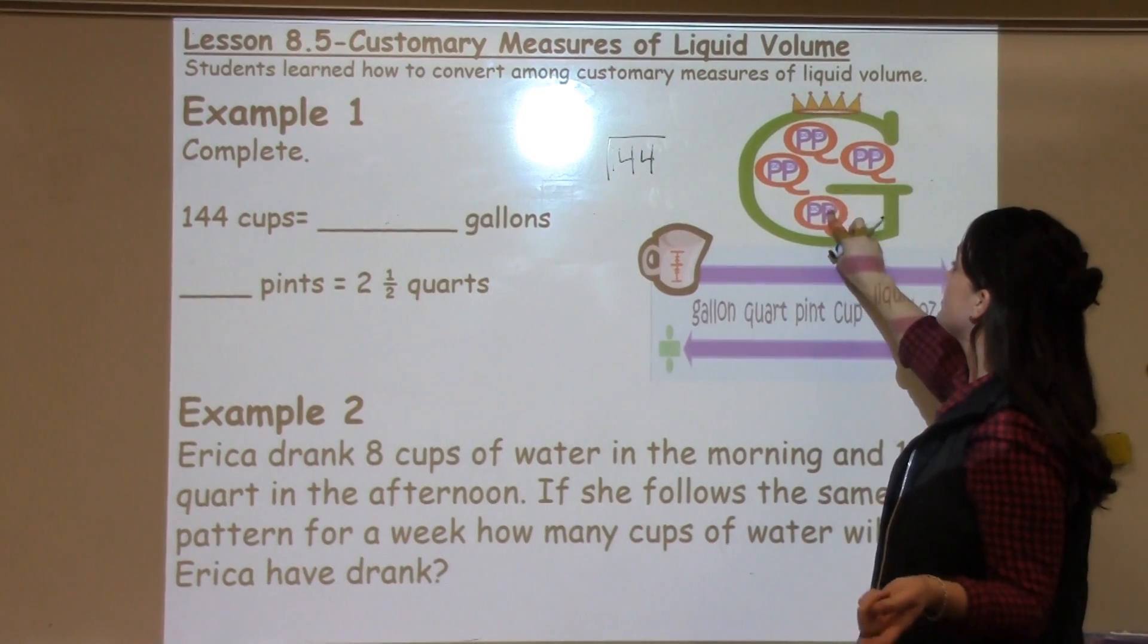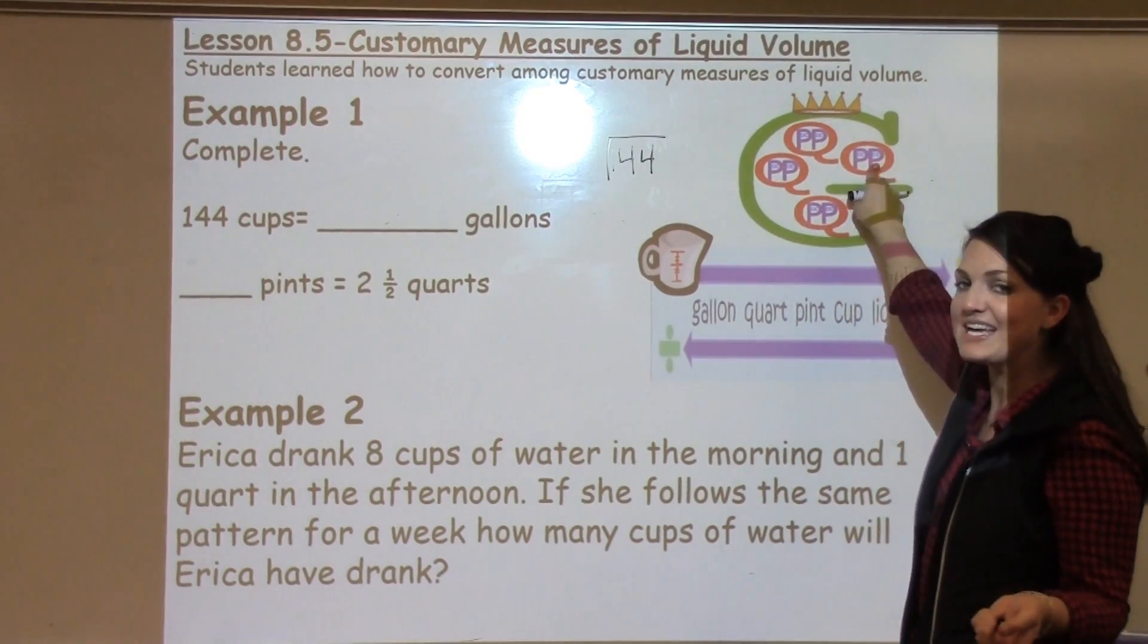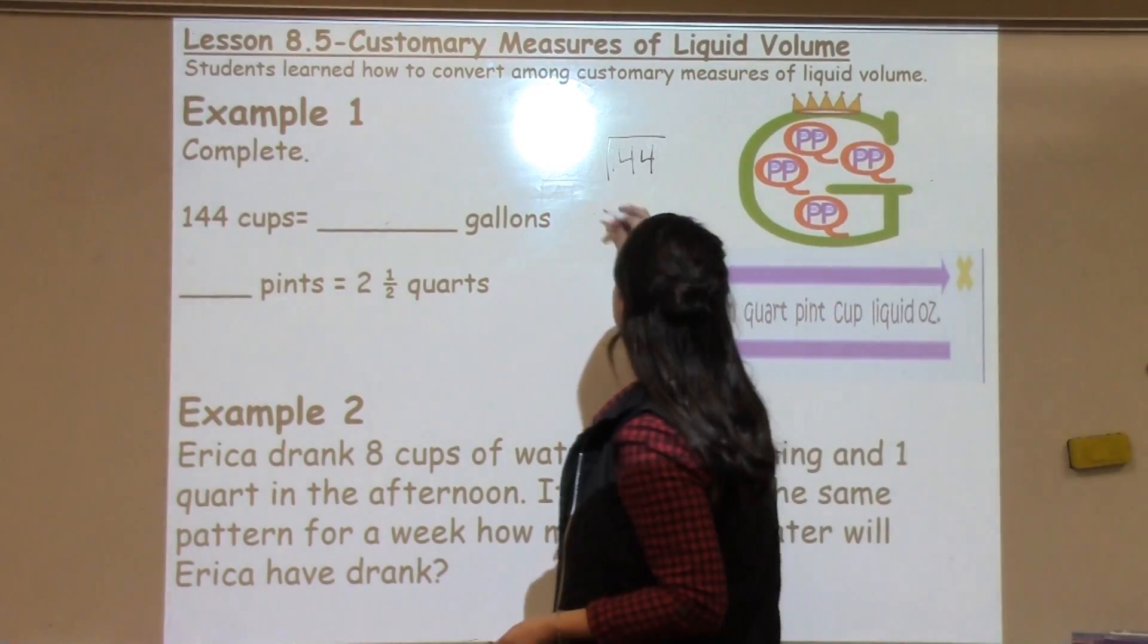2, 4, 6, 8, 10, 12, 14, 16 cups in one gallon. So, that's what I'm going to divide by.